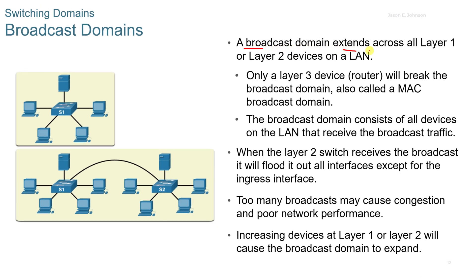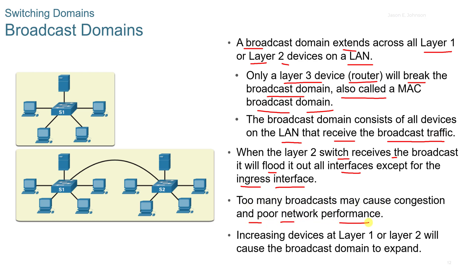A broadcast domain extends across all Layer 1 and Layer 2 devices on a local area network. Only a Layer 3 device — a router or routing — will break the broadcast domain, also called a MAC broadcast domain. The broadcast domain consists of all devices on the LAN that receive broadcast traffic. When a Layer 2 switch receives a broadcast, it floods it out on all interfaces except the ingress interface. Too many broadcasts may cause congestion and poor network performance, and adding more Layer 1 or Layer 2 devices will expand the broadcast domain.